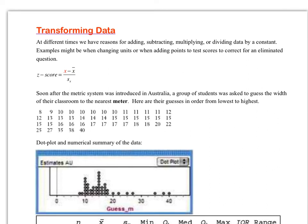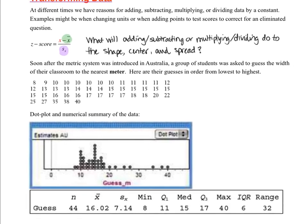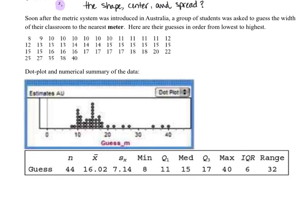Let's talk about transforming data. At different times we have reasons for adding, subtracting, multiplying, or dividing data by a constant — for example, when changing units or when adding points to test scores to correct for an eliminated question. When we standardize data into z-scores, two operations occur: subtraction by the mean and division by the standard deviation. Both transform the original data. We're going to look at what impact this has on the shape, center, and spread of the original data set. Soon after the metric system was introduced in Australia, students were asked to guess the width of their classroom to the nearest meter.